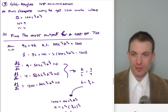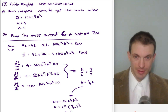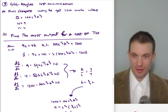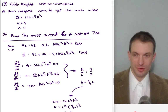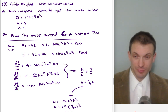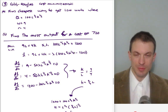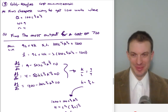The partial derivative with respect to labor gives us 9, and then one-half times lambda times 100 reduces the power by one-half, so we get 9 minus 50·lambda·(1/√L)·√K. The partial with respect to capital is similar: 4 minus 50·lambda·√L·(1/√K), because we reduce that power by one when taking the derivative.